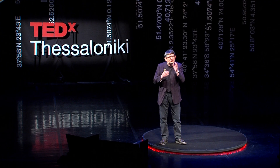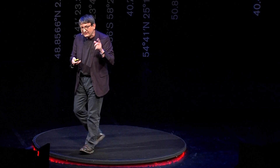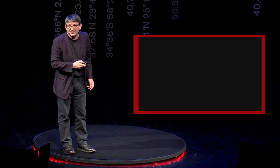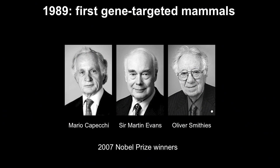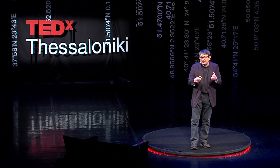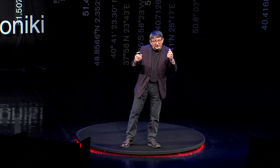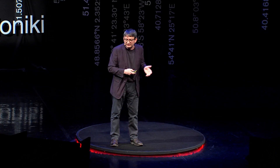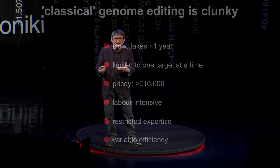If you wanted to make a change to just one of those balls among six billion, that's a big ask. The history of us being able to do that before 1989 looks like this: nothing — we couldn't do it at all. It wasn't until the work of three geniuses came together — they were awarded the Nobel Prize for Physiology or Medicine in 2007 — that we could do this for the first time in whole animals, mostly mice. But although the classical method has been extremely important, it's clunky, slow, limited to one target, extremely expensive, labor-intensive, with restricted expertise and very variable efficiency.